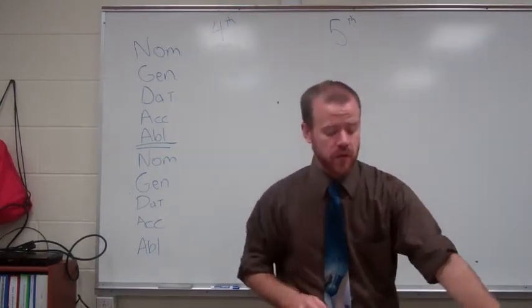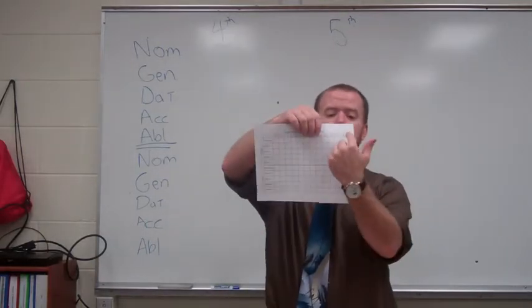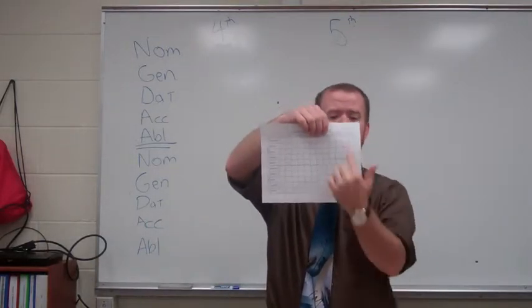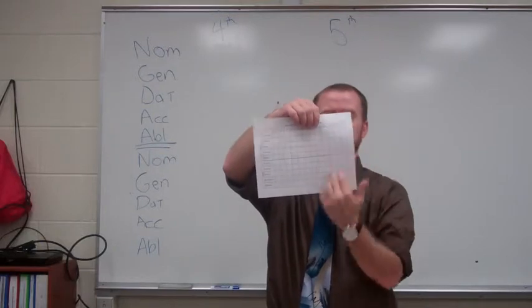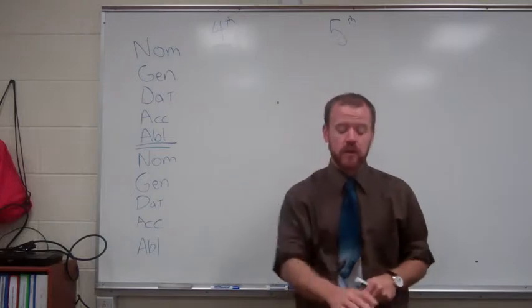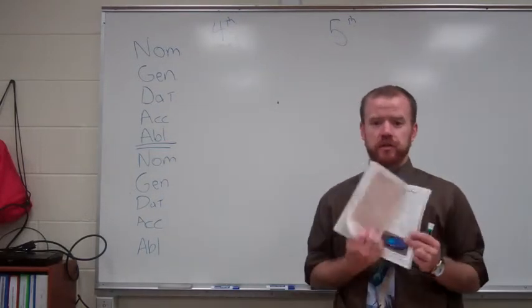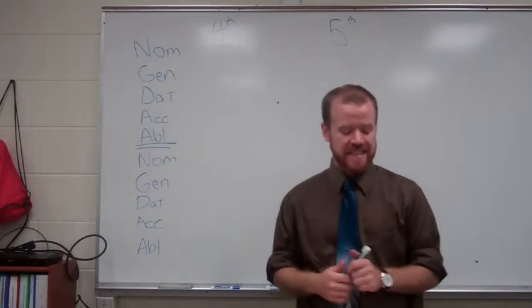So you should be following along with your case ending chart that you have here. We're going to be filling out the last column and the third from the last column. Alright, so the fourth and the fifth declension. We're going to skip the fourth neuter for right now. You can also follow along in your blue book on page 122. This is in stage 18.